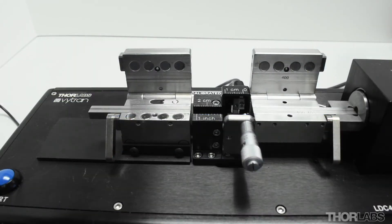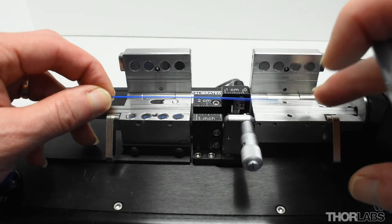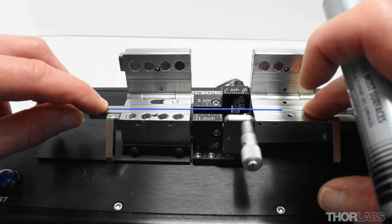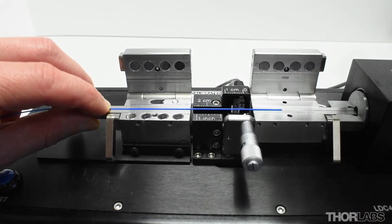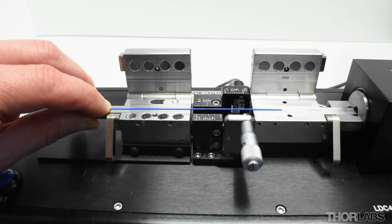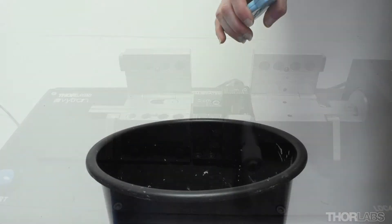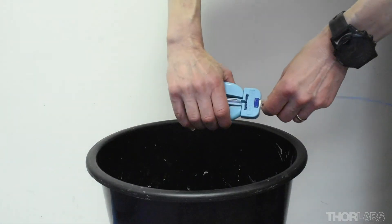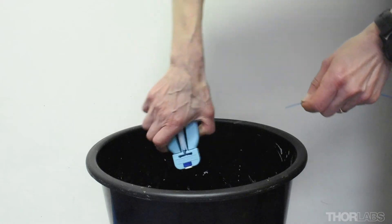Lay a length of clean fiber in the cleaver with the end extending to the far side of the right fiber holding block lid. Then use a felt tipped marker to mark where you want the strip shoulder to be. Now use an appropriate strip tool to remove the coating up to this strip shoulder.